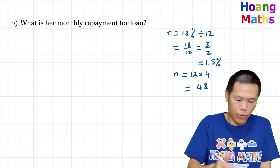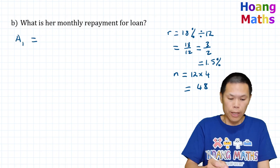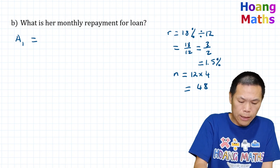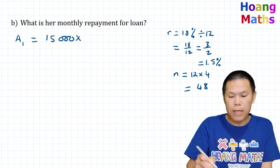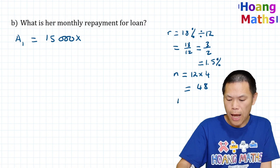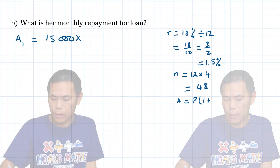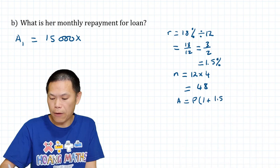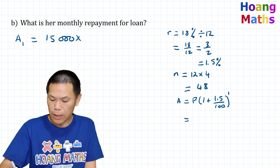We need to work out how much she owes at the end of each month. At the end of the first month, A1 equals the amount she borrowed — $15,000 — times the compound interest formula A = P(1 + r)^n, where r is 1.5 over 100.